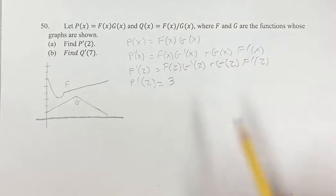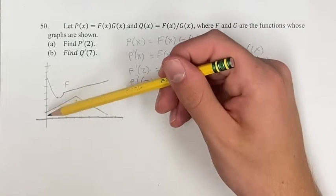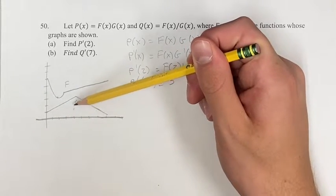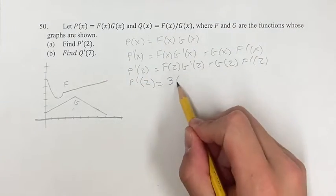The derivative of G at 2 is going to be on this line segment. So we're going 1, 2, 3, 4 to the right, and 1, 2 up. Therefore, the slope is going to be 2 divided by 4, which is 1 half.